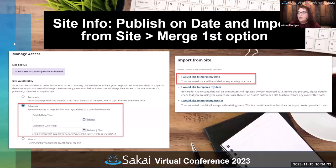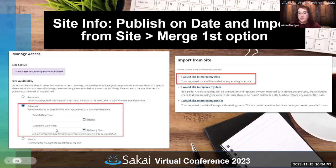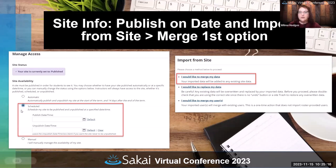In Site Info, a couple of things have changed. There's now a publish-on-date option under Manage Access, where you can schedule when a site will be published. You can have it automatically published on the first day of the semester, and set an unpublish time as well so it hides from students when the semester is over. The instructor would still have access, but you can now do this on a per-instructor basis so they can set their own start and stop dates for publishing.